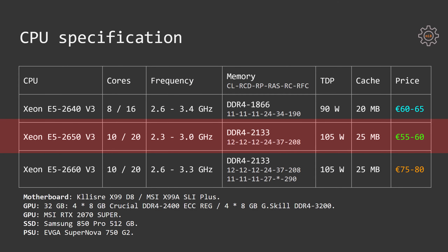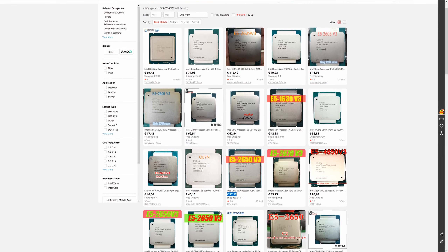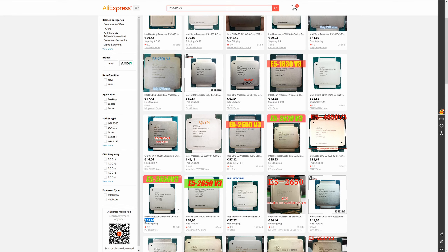Xeon E5 2650v3 has 10 cores and 20 threads, with a frequency of 2.3 to 3.0 GHz. It supports DDR4 2133, has a 105 watt TDP limit, 25 megabytes of cache, and is available on AliExpress for 55 to 60 euros.